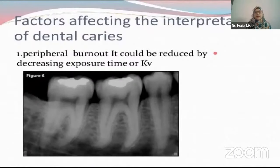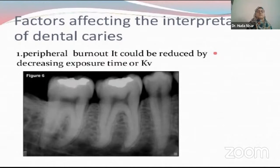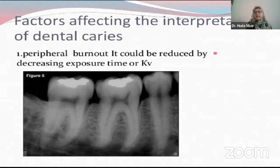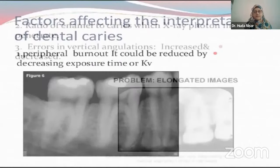We were talking about factors that could affect our interpretation and could mimic other problems — such as the peripheral burnout, which could also mimic cemental caries or cervical caries. The thing to observe is that a peripheral burnout will be constant and will be observed in every tooth, whereas cemental caries, if there are any, will not be observed in every tooth.